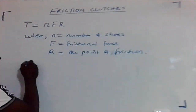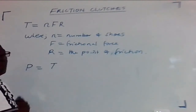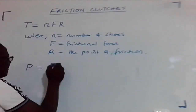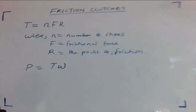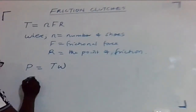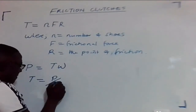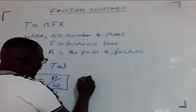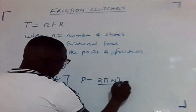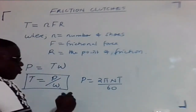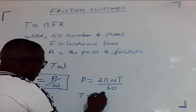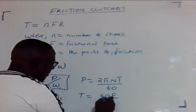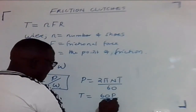Now we know that power is given by torque. Power is given by torque multiplied by omega. So the power to be transmitted shall be given at a certain speed, and the torque shall be derived from power divided by omega. We also know that power is equal to 2πNT over 60, which means that our torque can be expressed as 60P over 2πN.